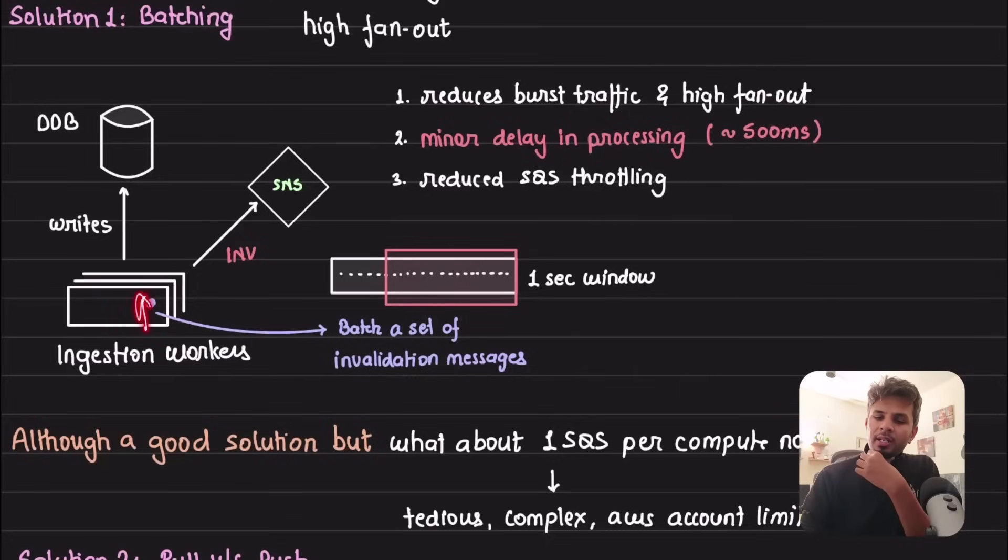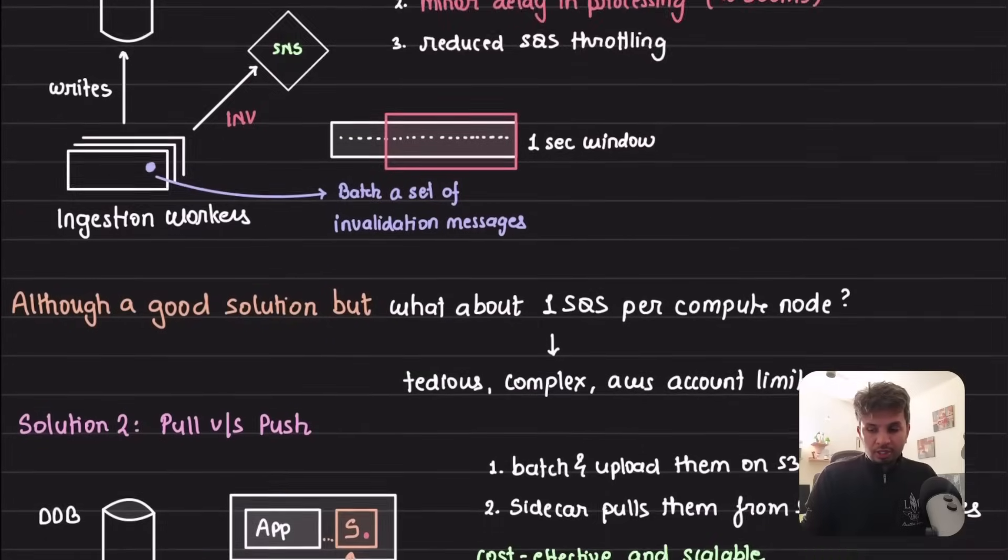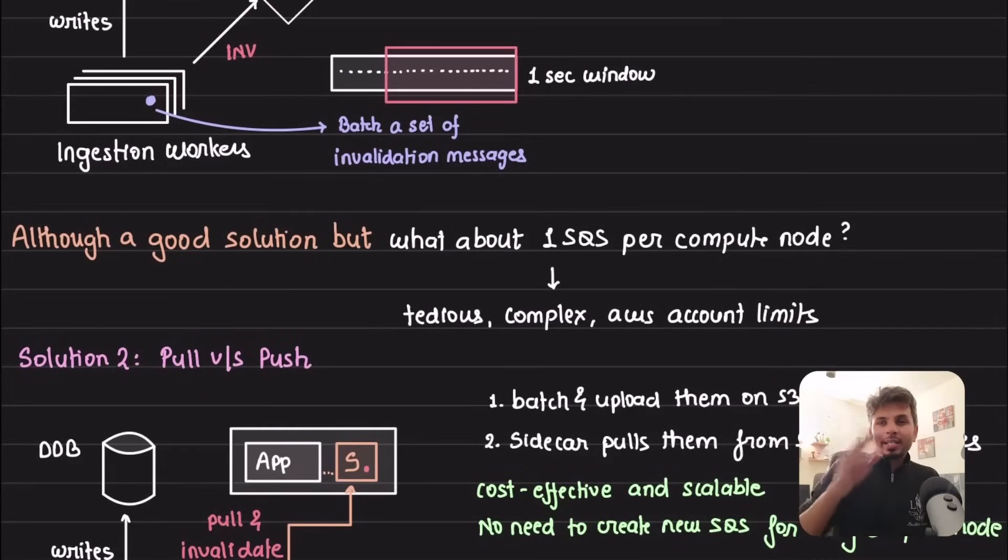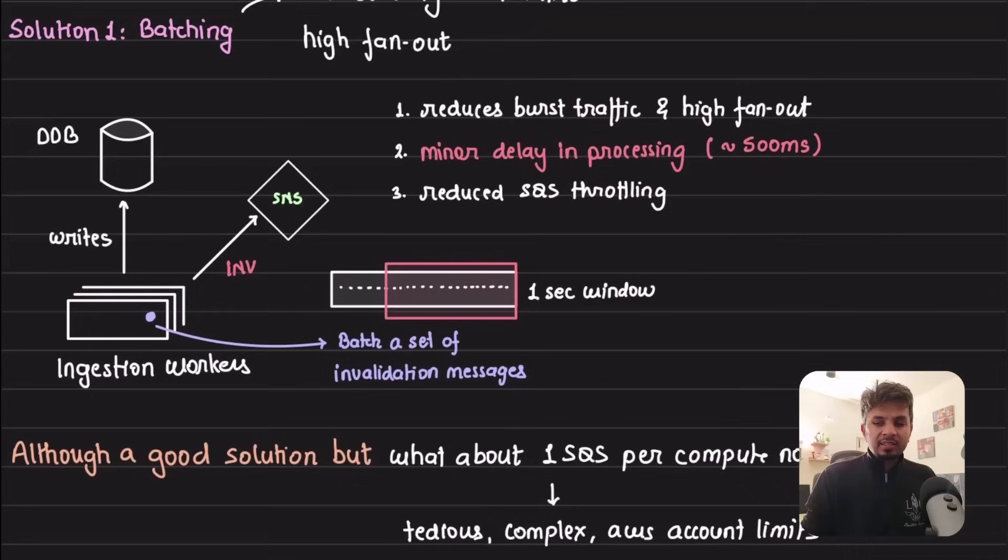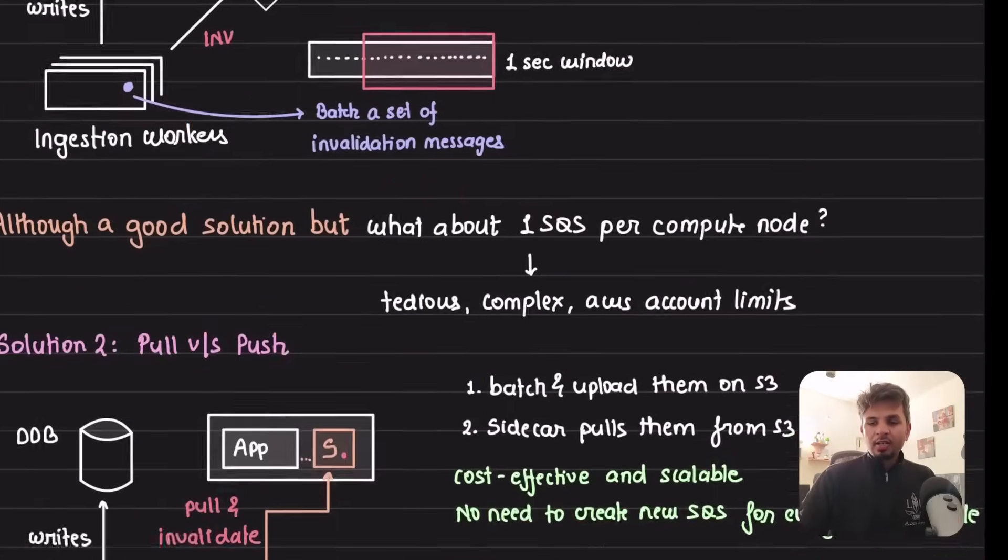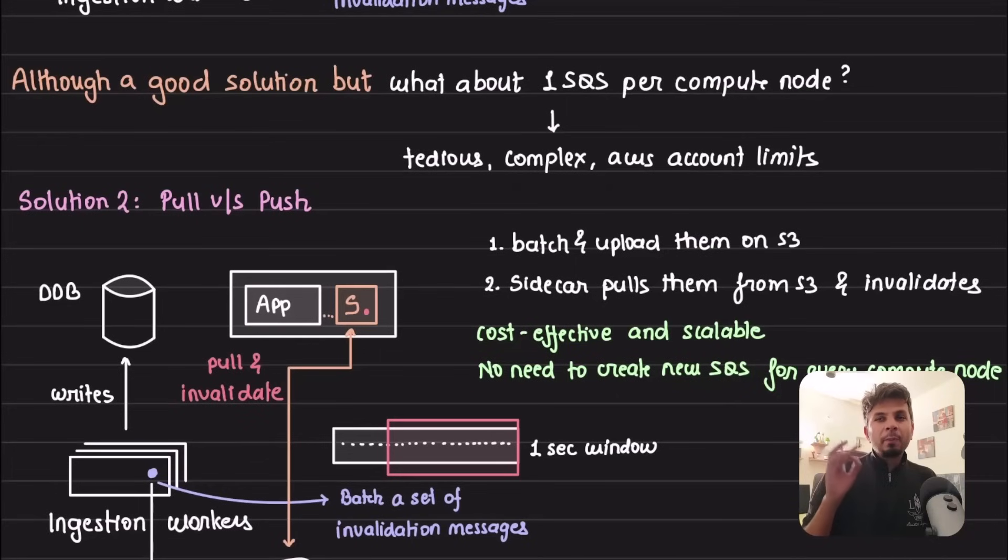It's high fanout as we discussed, but what batching does is it introduces delay in processing. When your ingestion worker is done updating the database, it needs to buffer the message for some time - a one second window - and then send one message to SNS. You are batching, it's a good solution, but you are still not avoiding the one SQS per compute node problem. Batching is slashing your number of messages, all good, but having one SQS queue per compute node seems criminal to be really honest.